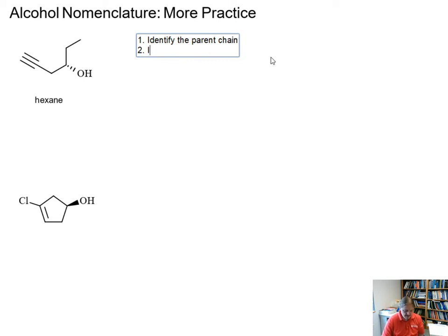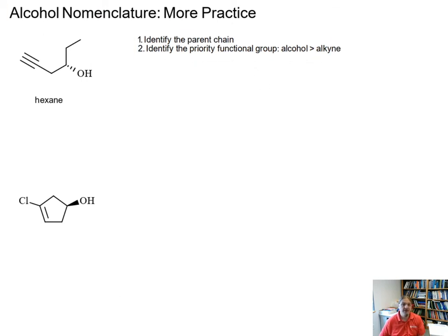The next thing we need to do is identify the priority functional group, so the functional group that is going to have the priority as far as the numbering goes. And the IUPAC established a series of rules and alcohol has higher priority than alkyne. And so that means we can number the structure so that the alcohol gets the lowest, the lower possible number.